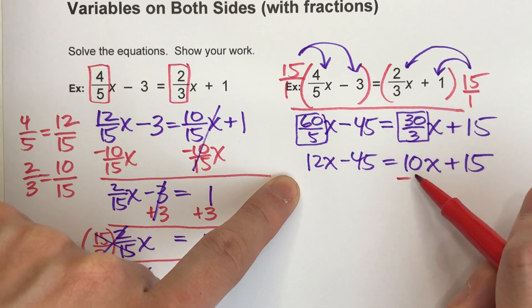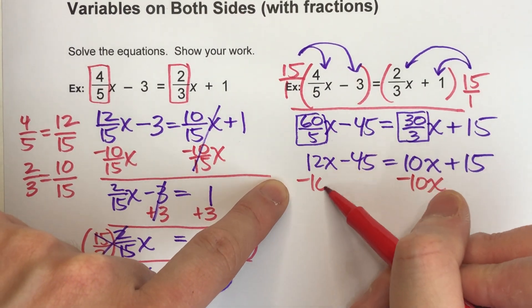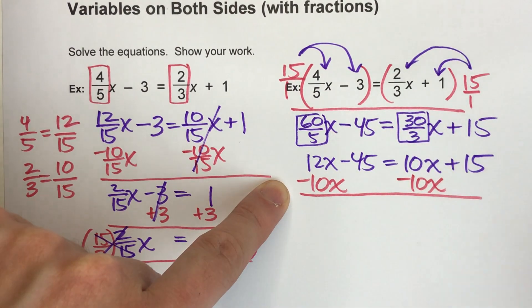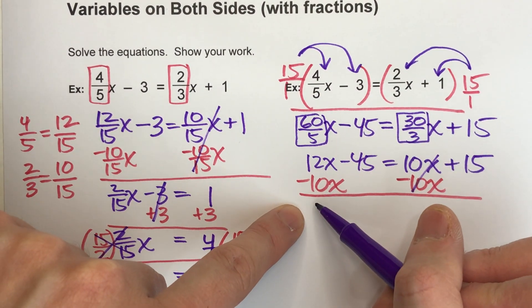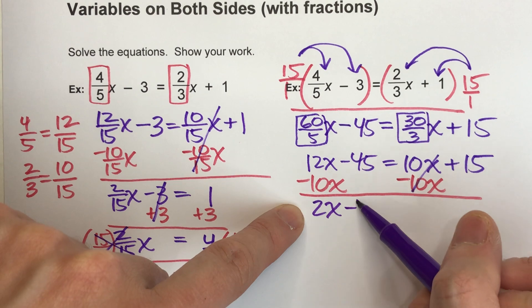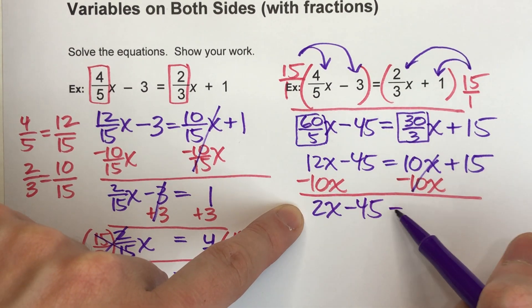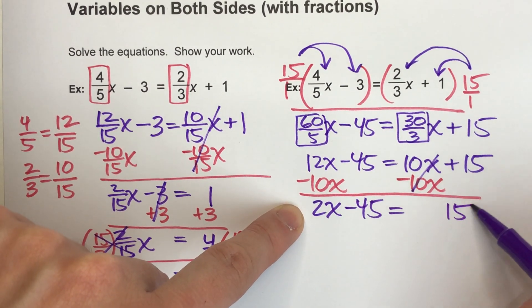So let's do that. x is on both sides. I'm going to subtract off 10x on both sides, so that way there's only x's on the left-hand side. 12x take away 10x is 2x. Drop down my 45 or minus 45. Drop down my equals and drop down my 15.